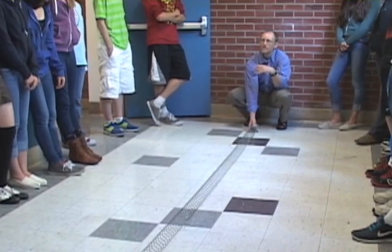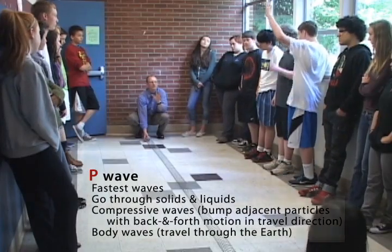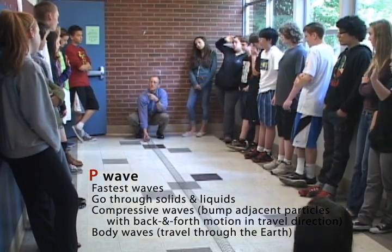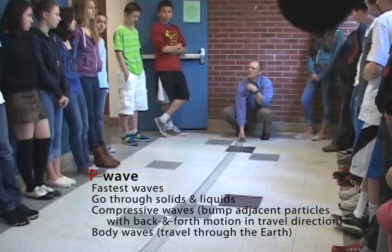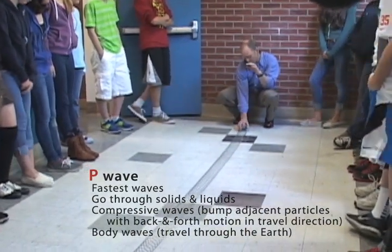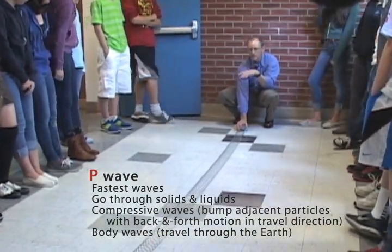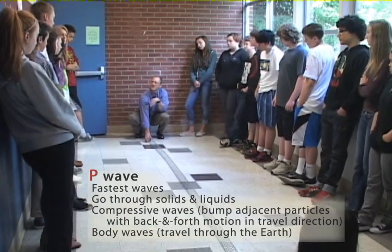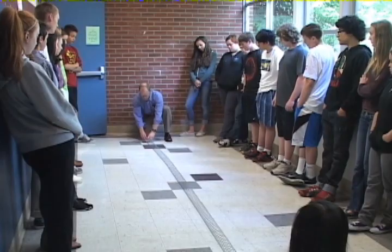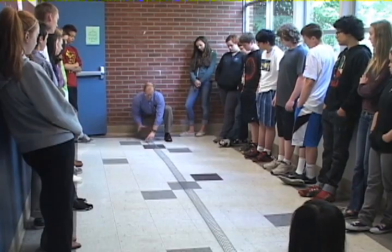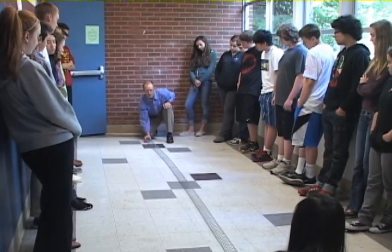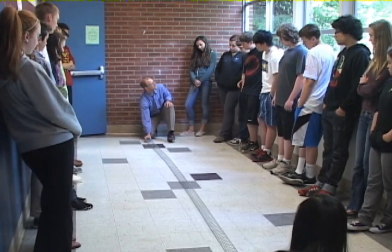So P waves — who can remind me what's important about P waves? Two things: they're fast, and number two, they go through solids and liquids. The other thing we're going to add to our notes is that they bump into the thing next to them. So here's a P wave — I'm going to simulate an earthquake by pushing the ground, and this is how a P wave travels: it bumps into the thing next to it.